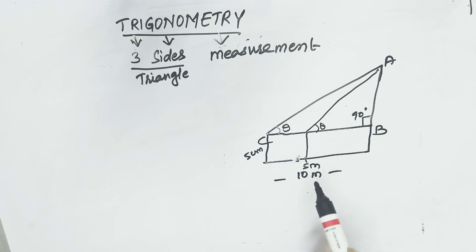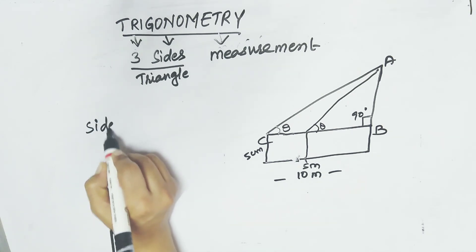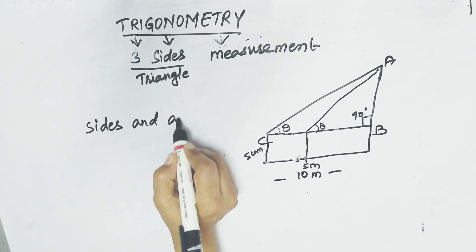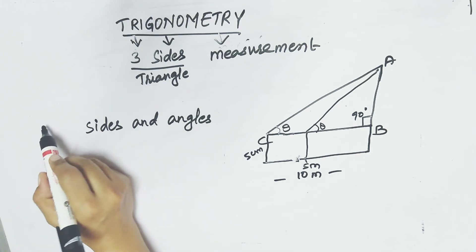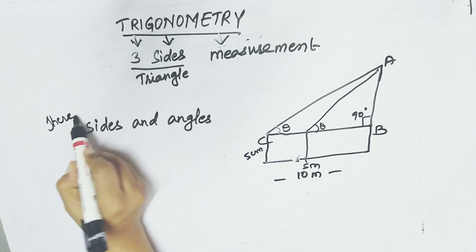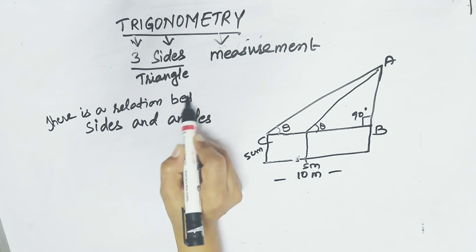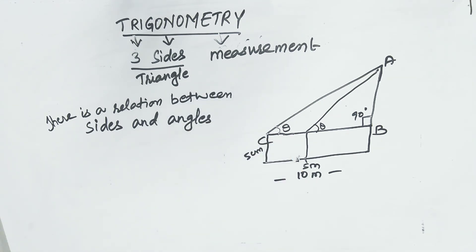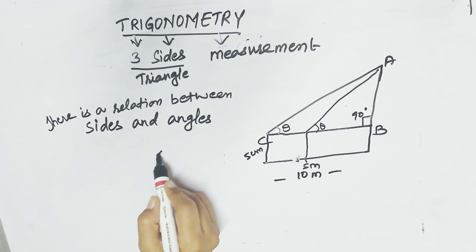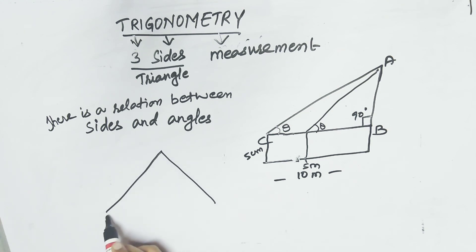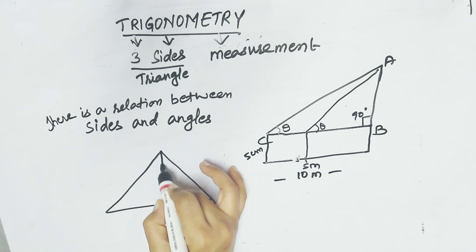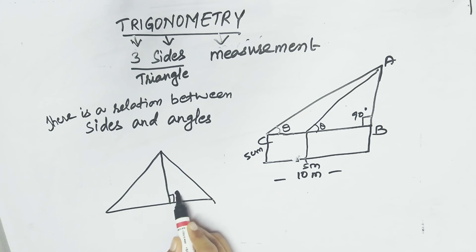To solve this kind of problem, you need sides and angles. With sides and angles, you can solve these problems because there is a relation between sides and angles. You will see why we use right angle triangles — for every figure you can get a right angle. For example, if a pyramid is divided into two parts, you get a right angle triangle because one angle must be 90 degrees. To solve this kind of problem, we require trigonometric ratios.